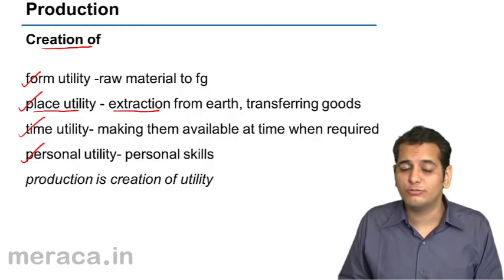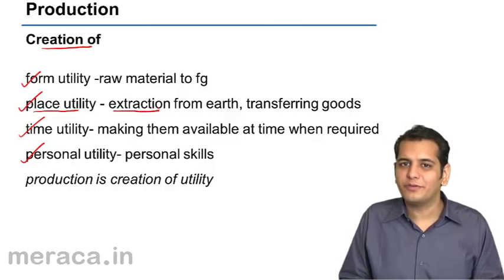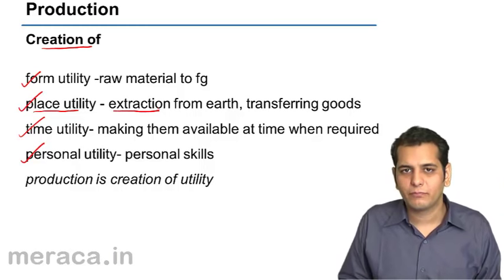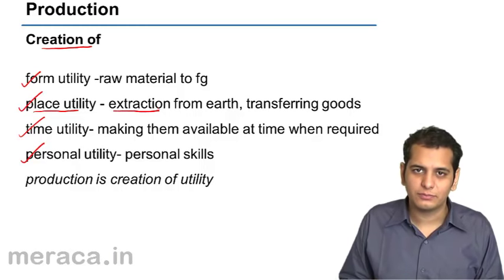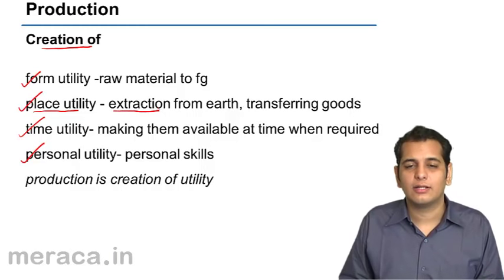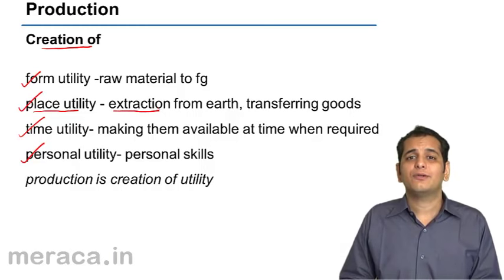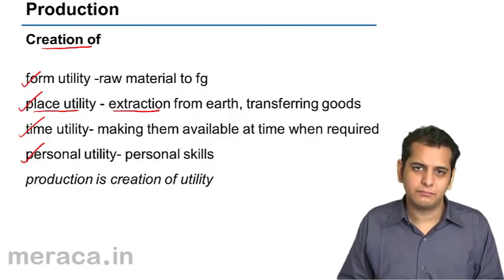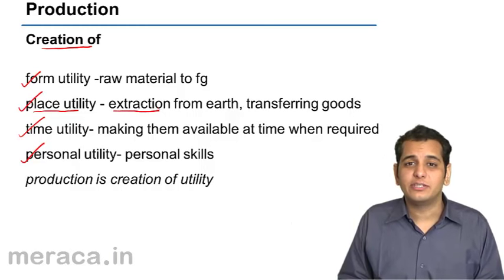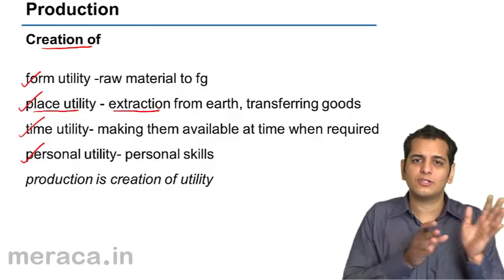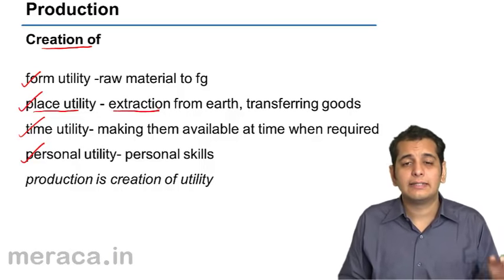Another example: Punjab produces a lot of wheat, but in Punjab the utility of wheat is not that great. It is only when the wheat is transported from Punjab to other states that it creates utility for other people. Similarly, China produces most of the electronics currently used in the world. Those electronics give utility to people in various parts of the world, but only when they are exported from China to other parts of the world do they create that utility.